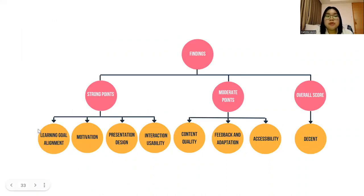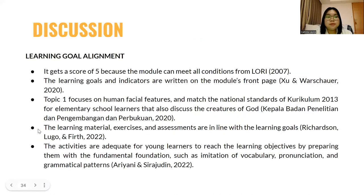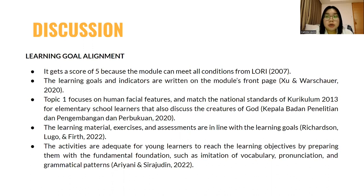The first category is learning goal alignment. It gets a score of 5 because learning goals and indicators are explicitly written on the front page. The topic matches the national standards of curriculum 2013. The learning material, exercises, and assessments are in line with the learning goals, and the activities are adequate since they prepare the learners to reach the learning objectives.